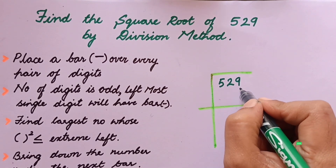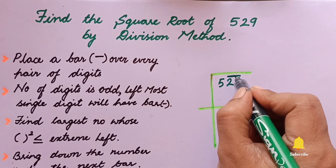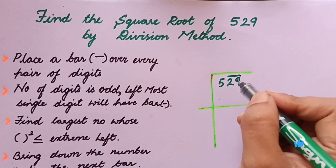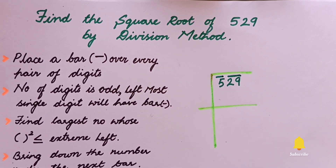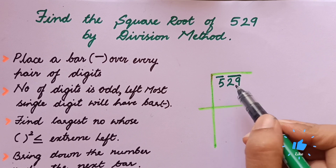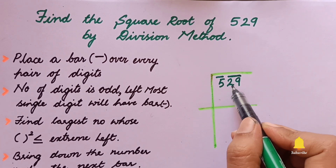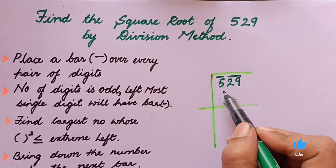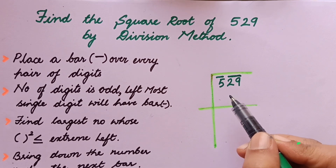Start from the units place, which is 9. After pairing from the right, one digit is left over on the left — that's fine. The rule is: the leftmost single digit will also get a bar, even if the number of digits is odd. That completes the first step.